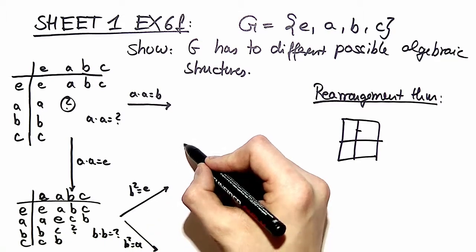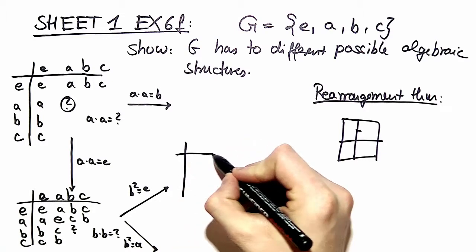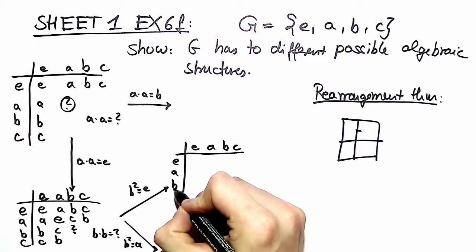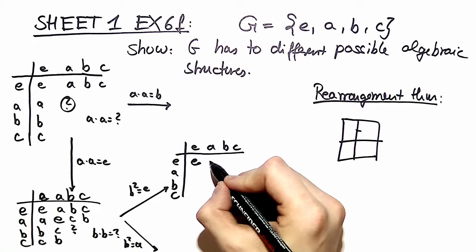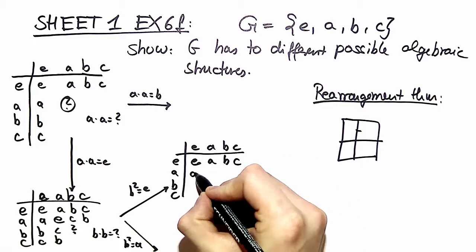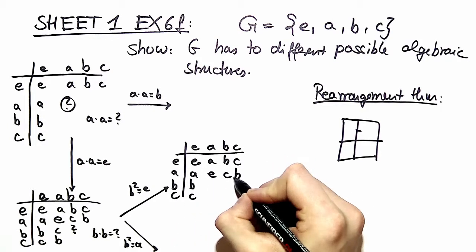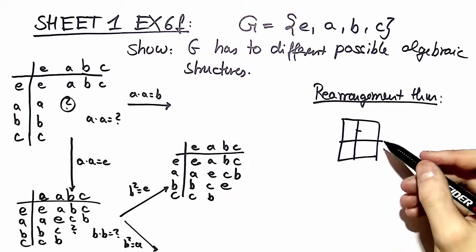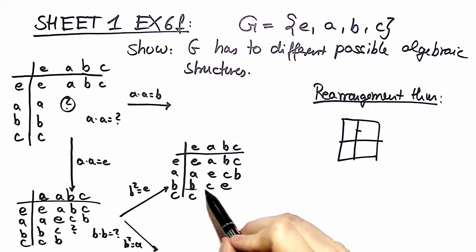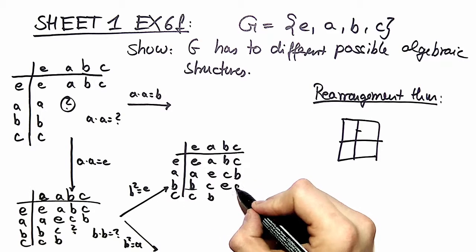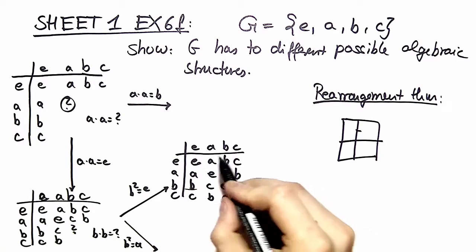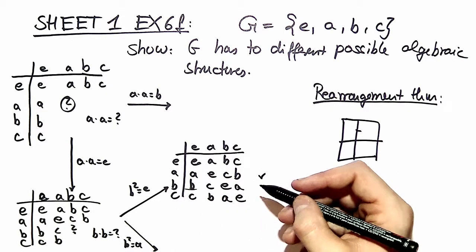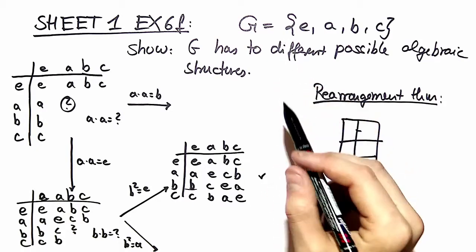Let's start by filling out the multiplication table for b squared equal e. We have e, a, b, c. And just quickly copy that from the left over here. Here we got e, b, c, b and here we have e. Again we use our rearrangement theorem. We see that the only letter missing here is a and the only letter missing here is a, and we can check e is correct. That is one possible multiplication table for a four element group.